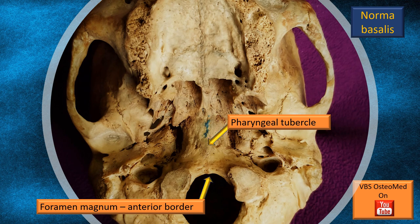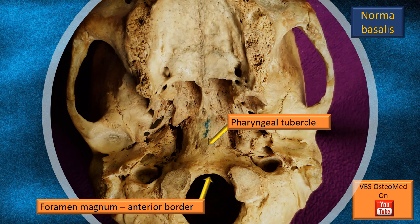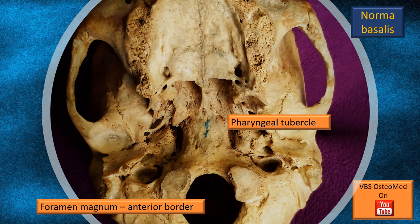Earlier I showed a circular region called the basi-occiput. At that time I mentioned we would identify the pharyngeal tubercle — and that is the label for the pharyngeal tubercle. Right behind it, the anterior margin of the large gap, namely the foramen magnum, is also shown. The foramen magnum is the region through which the brain is in continuity with the spinal cord, and there are many other structures passing through it which we will add in due course.